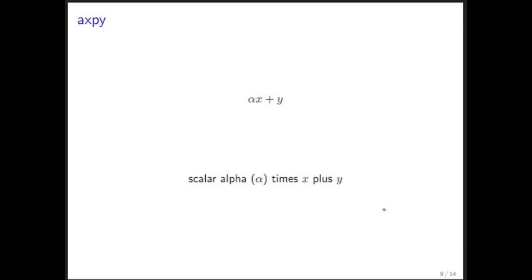Fortran 77 had the limitation that variables and subroutines had to be identified with at most six letters and numbers. So they had to be somewhat innovative about how to name operations and subroutines that implemented them.